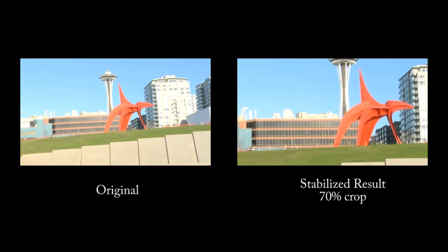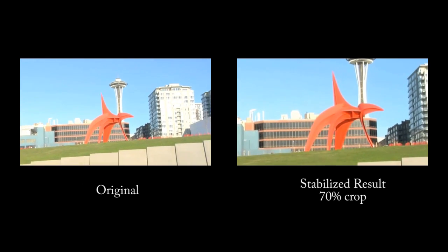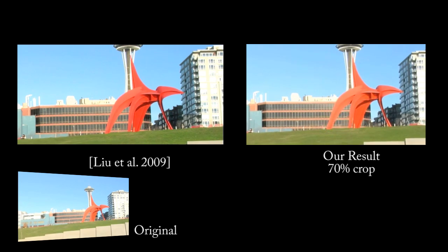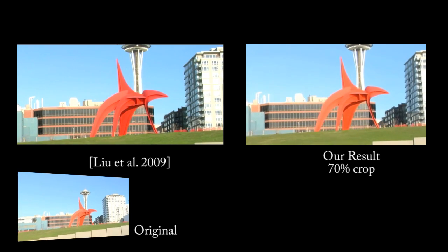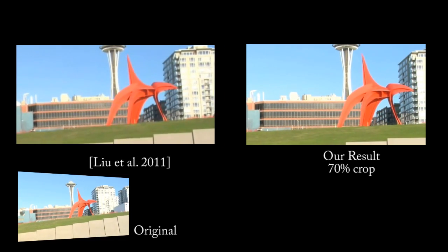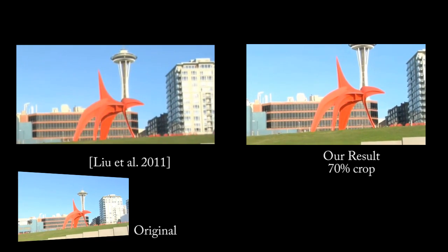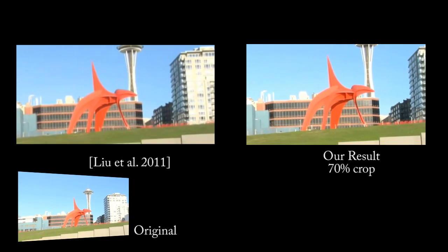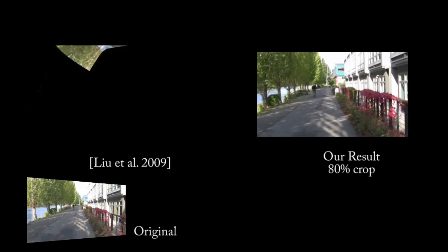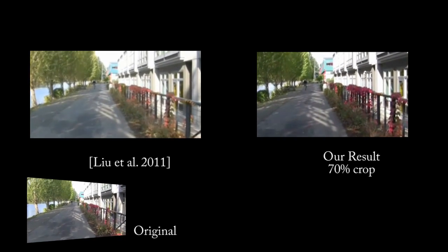The original on the left and our stabilized result on the right. Notice we obtain virtually the same result as Lew et al., avoiding the high cost of structure from motion. Here we compare to novel results of Lew et al., submitted to Transactions on Graphics. We obtain this result from the author's website. While structure from motion can produce good results, it is often unstable. Compared to Lew's new work, we better remove rolling shutter.